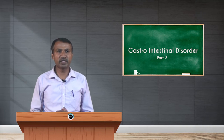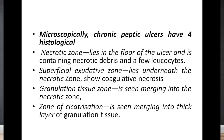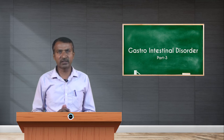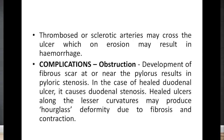When we look at the microscopical picture, chronic peptic ulcers have four histological zones: the necrotic zone, which lies in the floor of the ulcer and contains necrotic debris and a few leukocytes; the superficial exudative zone, which lies underneath the necrotic zone and shows coagulative necrosis; the granulation tissue zone, which merges into the necrotic zone; and the zone of cicatrization, which merges into a thick layer of granulation tissue. Thrombosed or sclerotic arteries may cross the ulcer, and on erosion may result in hemorrhage.